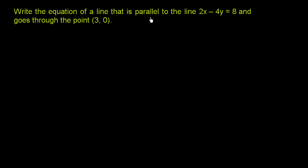Write the equation of a line that is parallel to the line 2x minus 4y equals 8 and goes through the point (3, 0). Because this line is parallel to this right over here, it is parallel, that just means it has the exact same slope. So it's essentially saying find the equation of a line that has the same slope as this line and goes through this point.